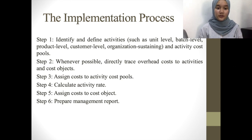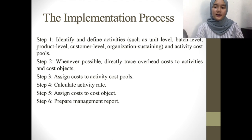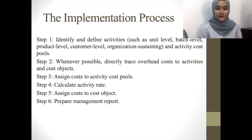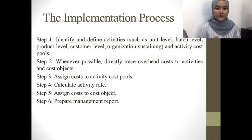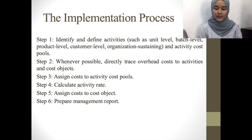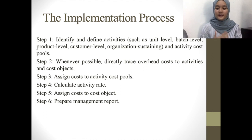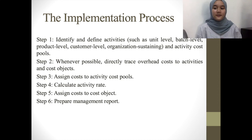For the implementation process, there are six steps. The first step is to identify and define activities. For the activities, we can refer to the cost hierarchies under Activity-Based Costing. Under this cost hierarchy, there are four costs: output unit level cost, batch level cost, facility sustaining cost, and product sustaining cost. After defining the activities, you should also define the activity cost pools.